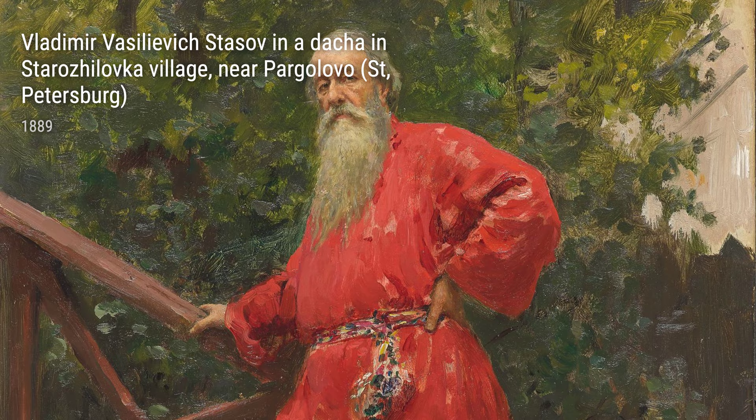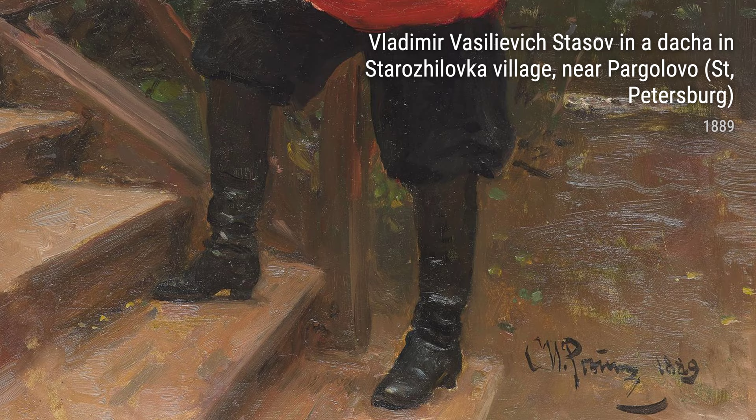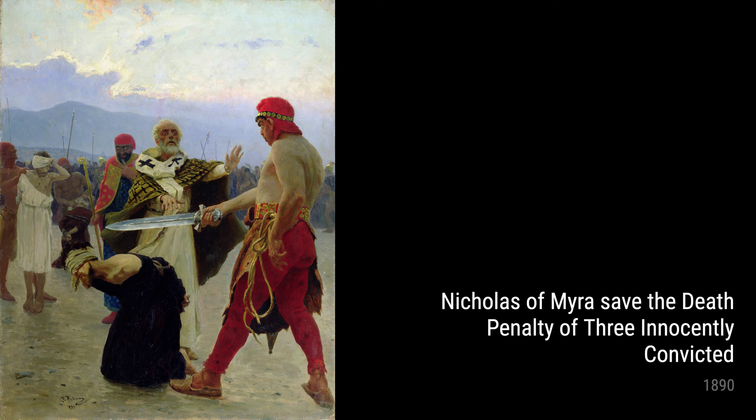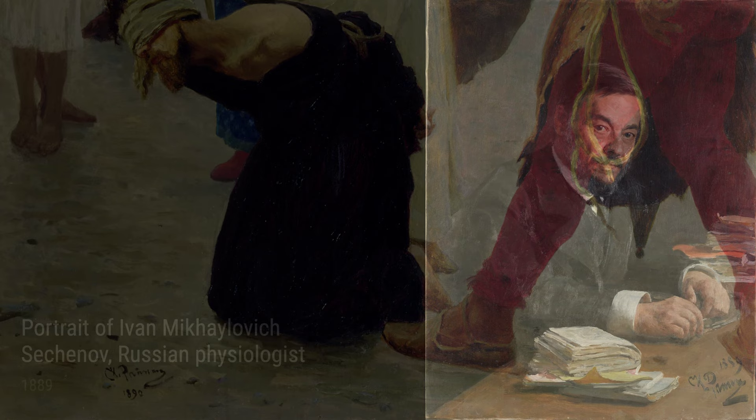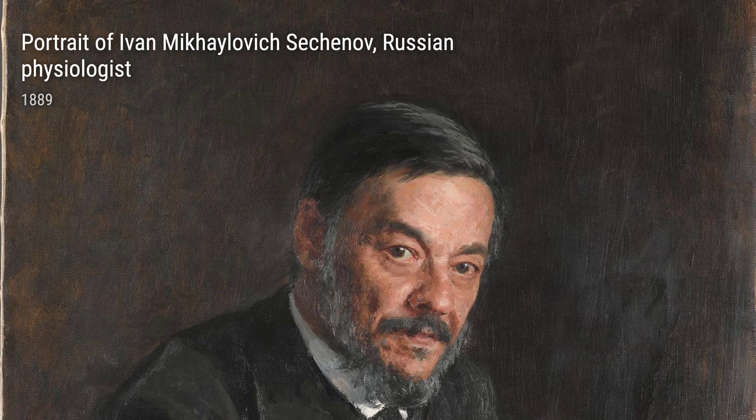"Surgeon E. B. Pavlov in the Operating Room," painted in 1888, depicts a surgeon hard at work, showcasing Repin's interest in capturing the dedication and skill of professionals in their fields. "Road in Winter," also from 1889, showcases Repin's ability to capture the beauty of nature, even in its harshest forms. This painting reflects his love for the Russian landscape and the emotions it evoked in him.